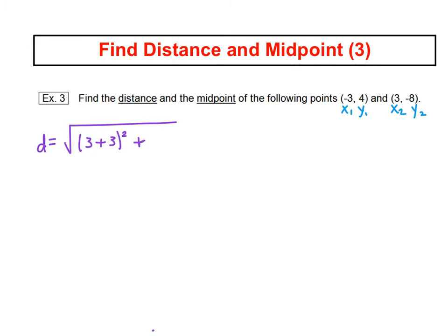Add to that, now we subtract the y's: y2 minus y1, so negative 8 minus 4, and then that gets squared.